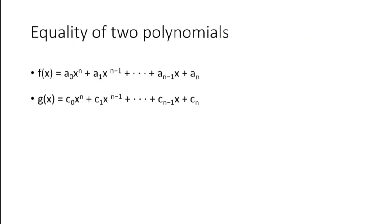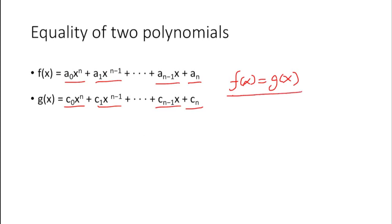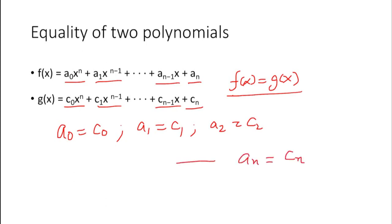Now let us find the degree of various polynomials. In this equation the highest power of x is 2, so this is a polynomial equation of degree 2. Similarly, in this equation the highest power of x is 3, so this is a polynomial equation of degree 3. Now let us understand how we equate two polynomials. If f(x) equals g(x) and these two polynomials are of the same degree, then each and every term of the polynomial should be equal: a₀ = c₀, a₁ = c₁, a₂ = c₂, and all the way up to aₙ = cₙ. Only if this condition is satisfied can we call these two polynomials equal.